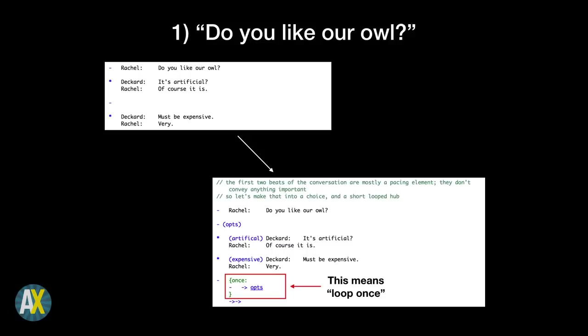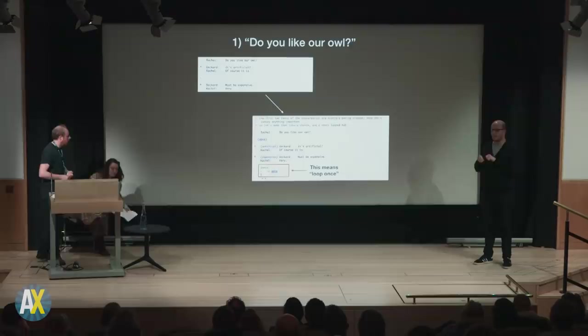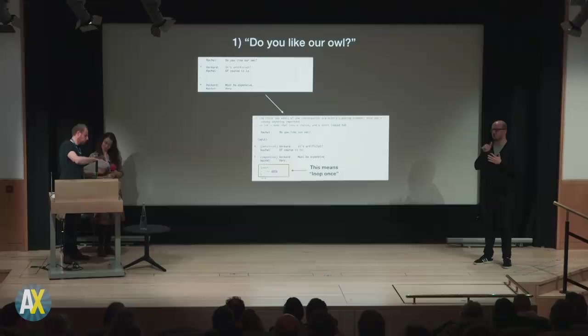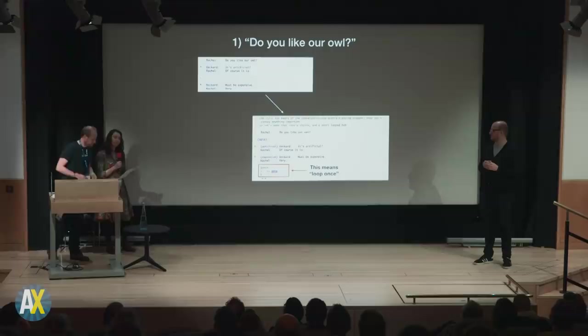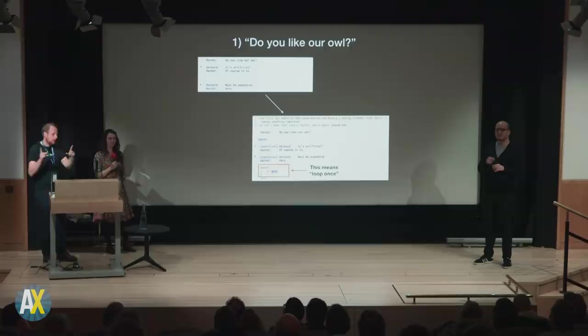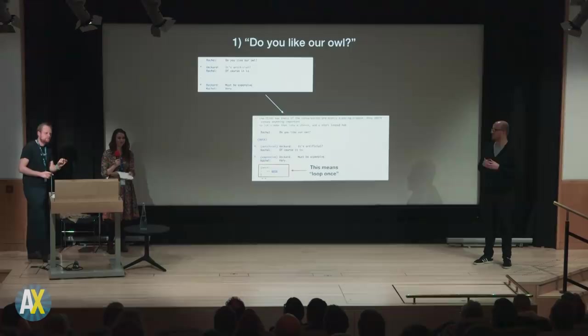I'm going to implement this in Ink — it literally just loops once, so we run this dialogue twice. Let's test that with Sally. Do you like our owl? It's artificial. Of course it is. Must be expensive. Very. We've replicated the initial scene. But going again: Do you like our owl? It must be expensive. Very. It's artificial? Of course. That doesn't quite work as well — it's subtle, but when they say 'must be expensive, very,' that was the point where Rachel says 'I'm rich.' The artificial observation is not where Rachel wants to end the scene, so we'd better not let that happen. Let's tweak it.